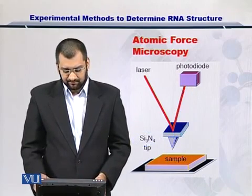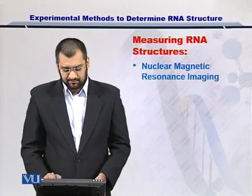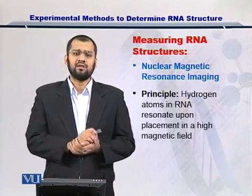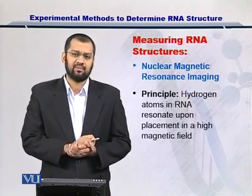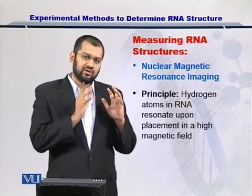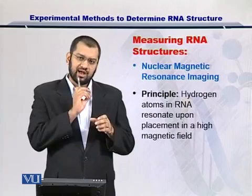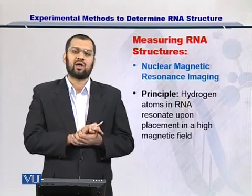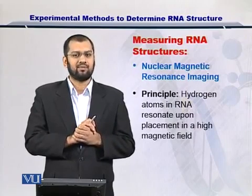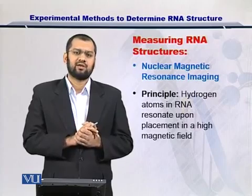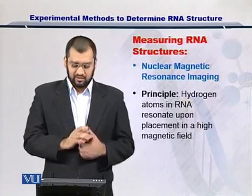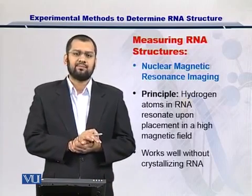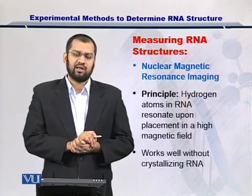Besides atomic force microscopy, there is another technique: nuclear magnetic resonance imaging. In this technique, the hydrogen nuclei within the RNA molecule, once the molecule is placed within a very high magnetic field, resonate. We can measure this resonance and try to estimate the two prime or the three prime structure. Of course, NMR is a little bit expensive, and therefore we need to use it selectively. Importantly, crystallization is not required in this case either.